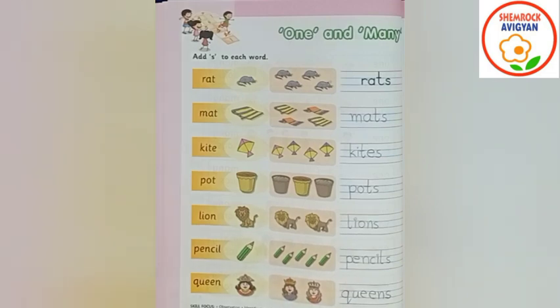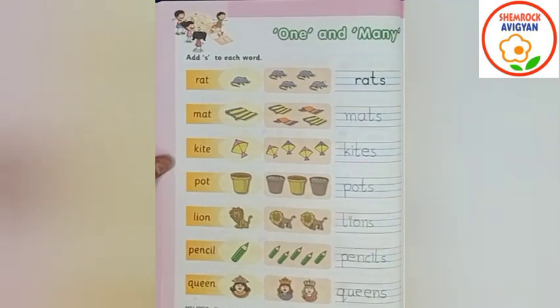So we have revised the 'one and many' two concepts. My dear Shemro Kites, you have now done the activity sheet. Take a photo of this activity sheet and submit it on Google Classroom. Okay, so my dear Shemro Kites, our lesson is over now. Take care of yourself. Love you all. Bye-bye.